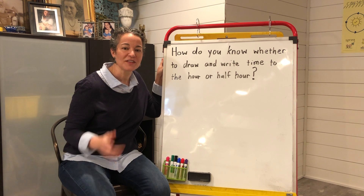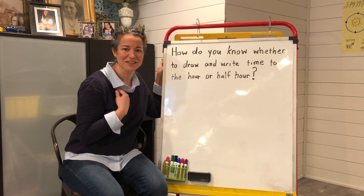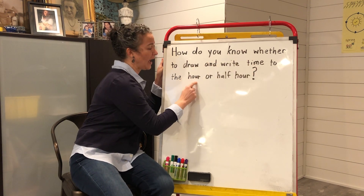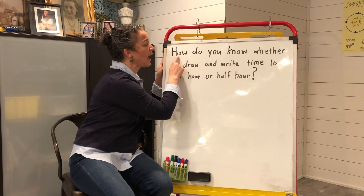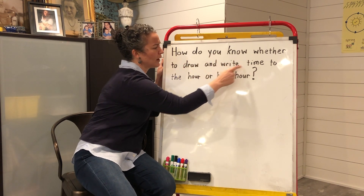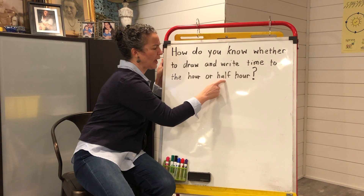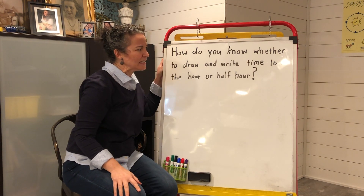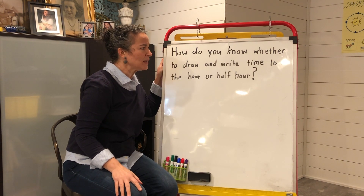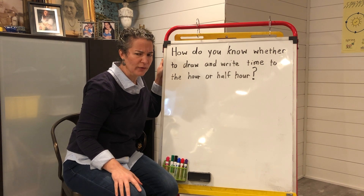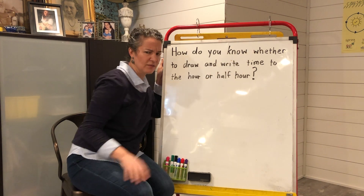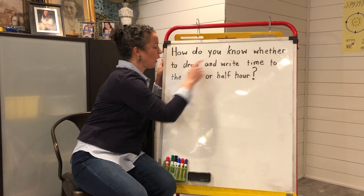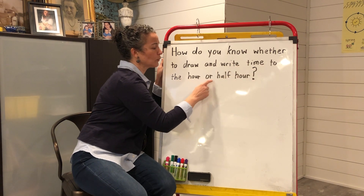All right, my friends, the first thing we're going to do is read the essential question. Let me read it the first time and then you read it with me the second time. How do you know whether to draw and write time to the hour or half hour? Read it with me, my friends. How do you know whether to draw and write time to the hour or half hour? Now, see this word 'whether,' W-H-E-T-H-E-R — that means being able to make a choice between two or more things. Read the essential question one more time with me: How do you know whether to draw and write time to the hour or half hour?